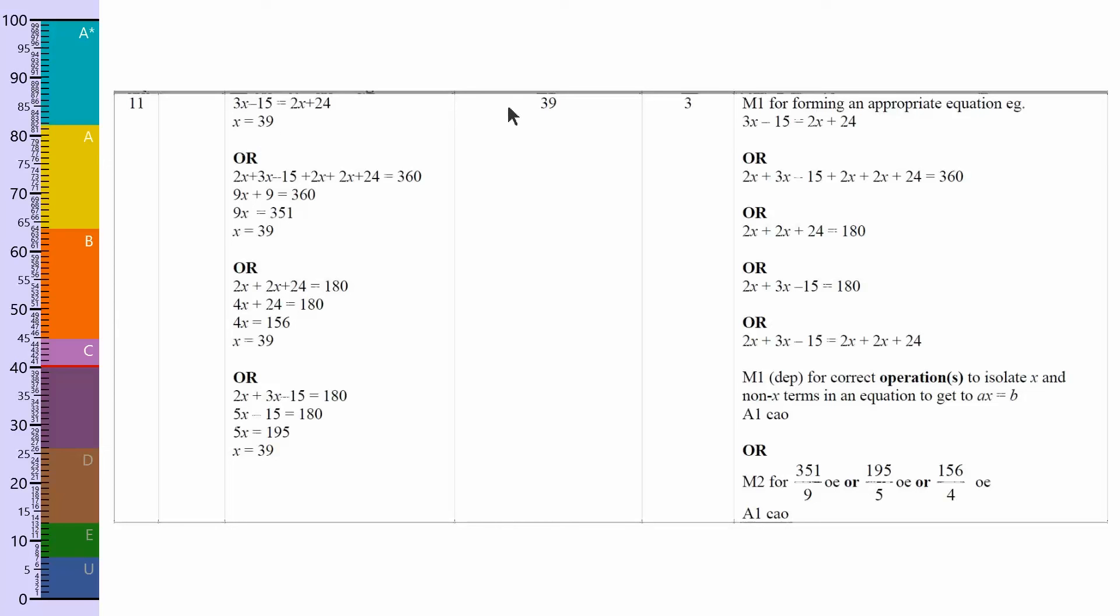Now you could have used the fact that all angles in any quadrilateral four-sided shape add up to 360, which is what they've done here. They've added all of them together. But that, for me, takes a little bit longer. It might be easier for some people because they don't have x's on both sides. So if you struggle with that, then that might have been a better method.